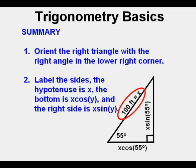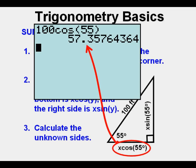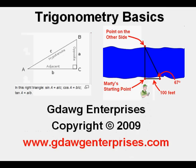And finally use the expression to calculate the side or sides of the triangle that are unknown, which in this case is about 57.4 feet for the base of the triangle. This has been Trigonometry Basics. Thanks for viewing.